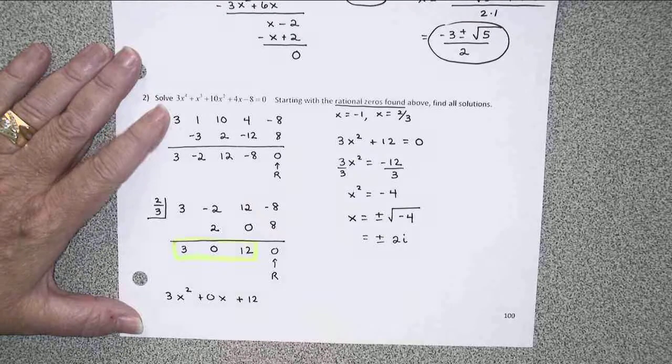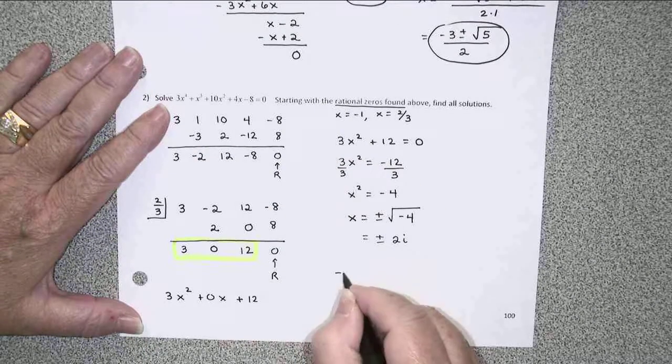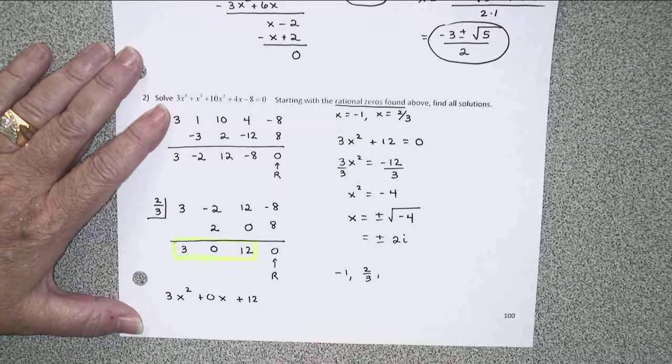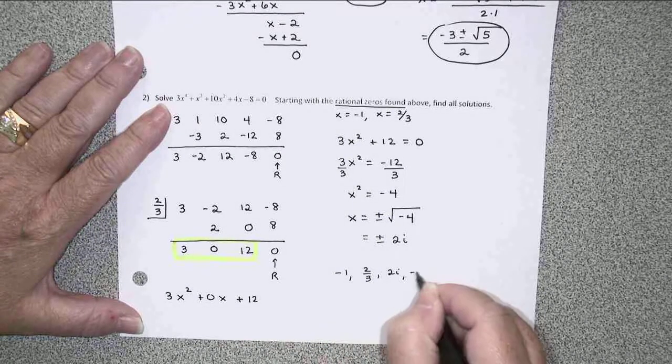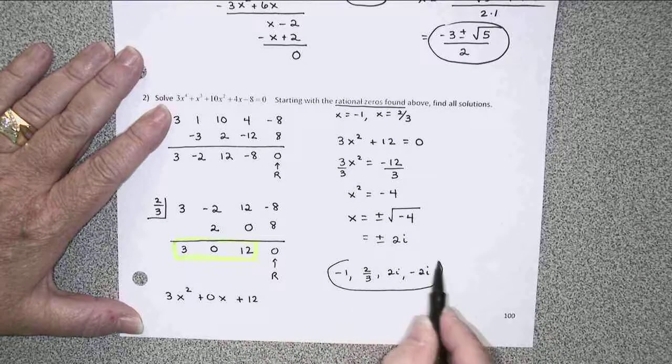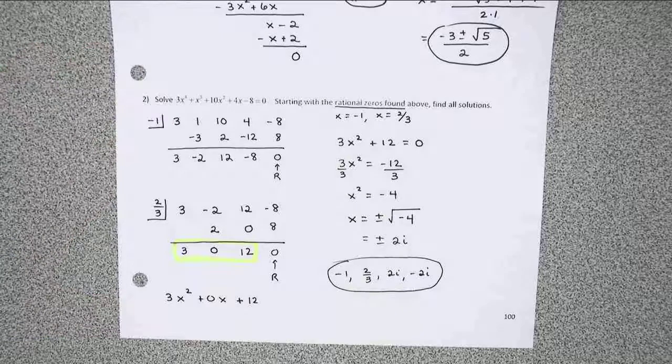So once again, I think we've found four solutions for our fourth degree, which is exactly what we expected. We already had the negative 1 and the 2 thirds from the rational zeros, and then we've got 2i and negative 2i, imaginary zeros that came out of the process. This is a somewhat lengthy process.